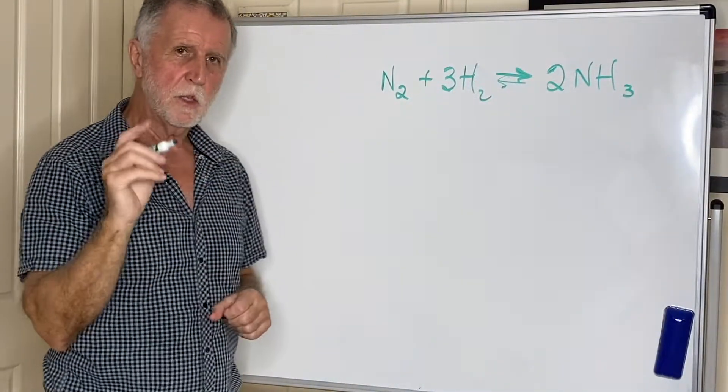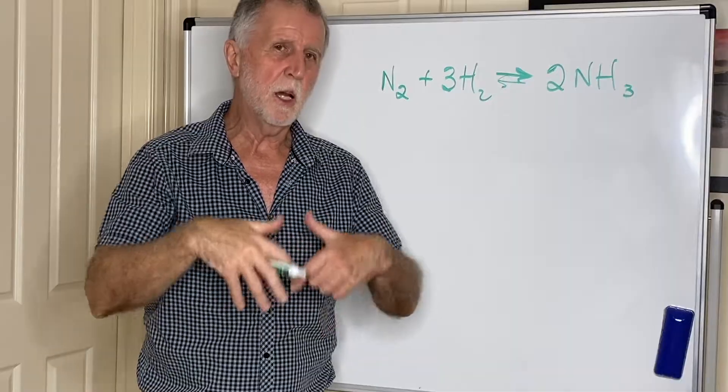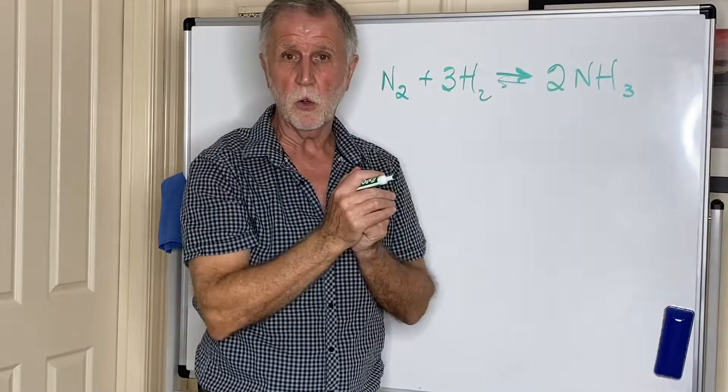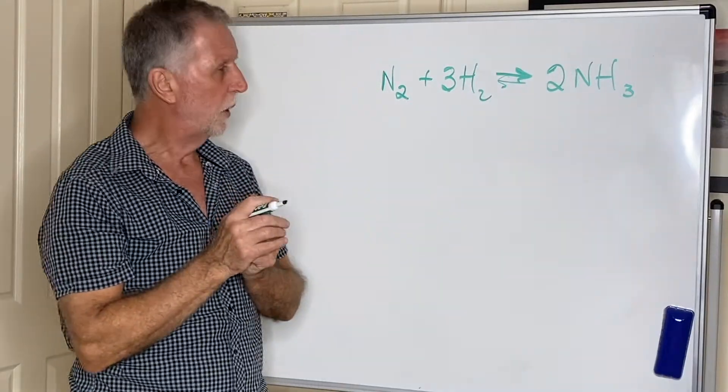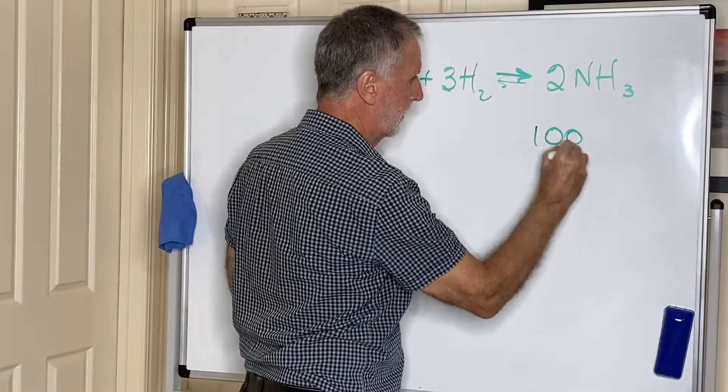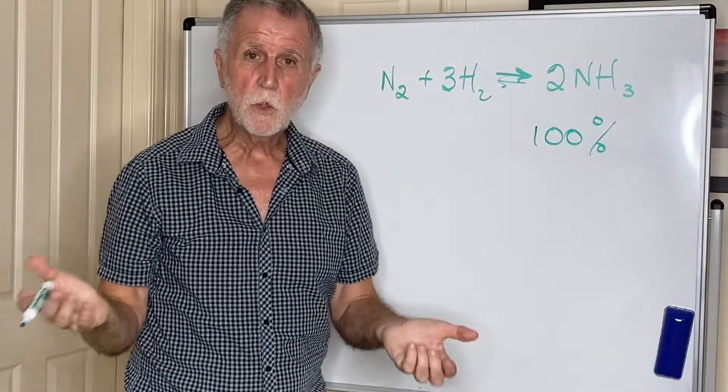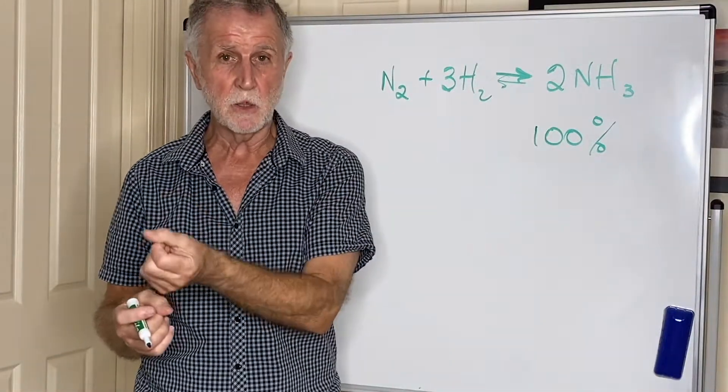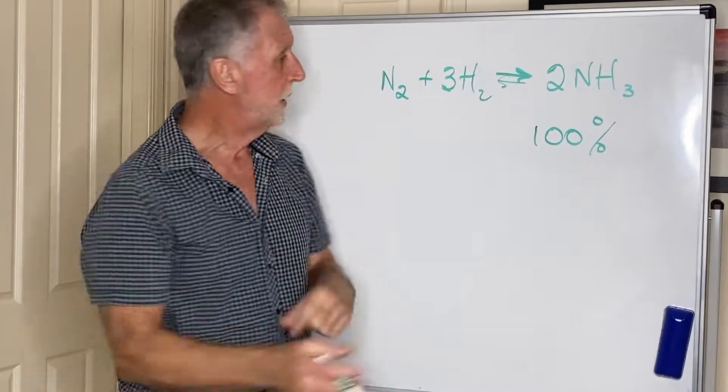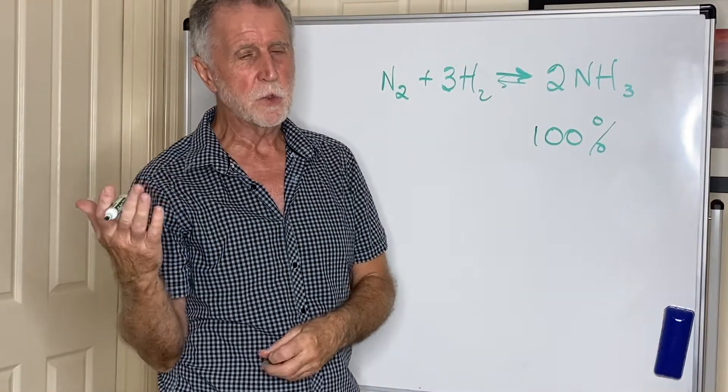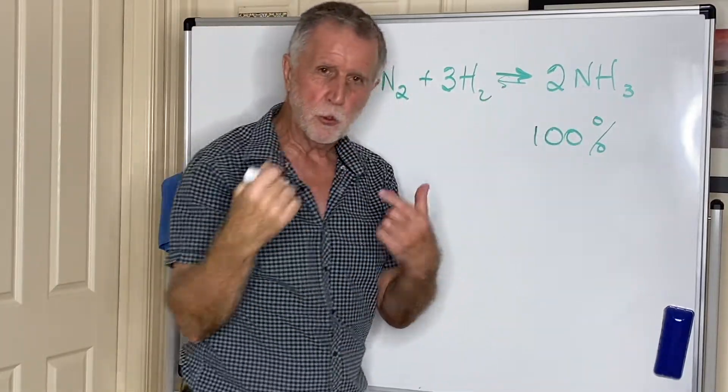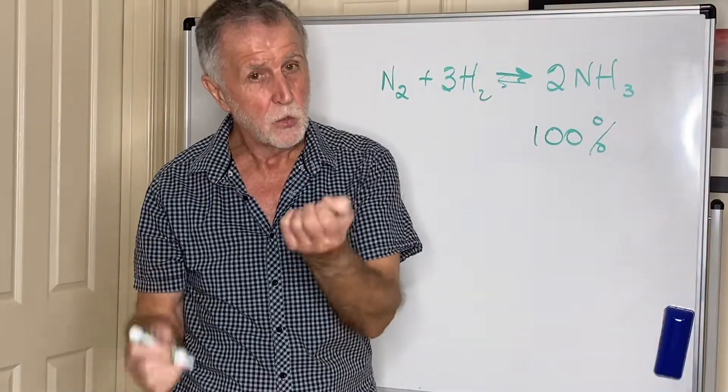Now, based on what we said a moment ago, atom economy is how much of the desired product is formed compared to the total amount of product that's formed. So what would the atom economy be of the Haber process? Because it's the only product, there's no waste, so therefore the atom economy is 100 percent. Don't confuse that with yield. The yield of this reaction is way less than 100 percent, but at least every time these react, they produce the product that we want, so that makes it 100 percent effective from an atom economy point of view.